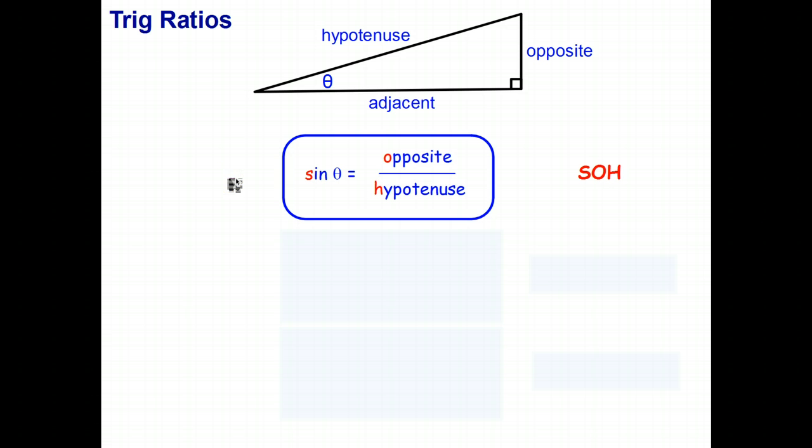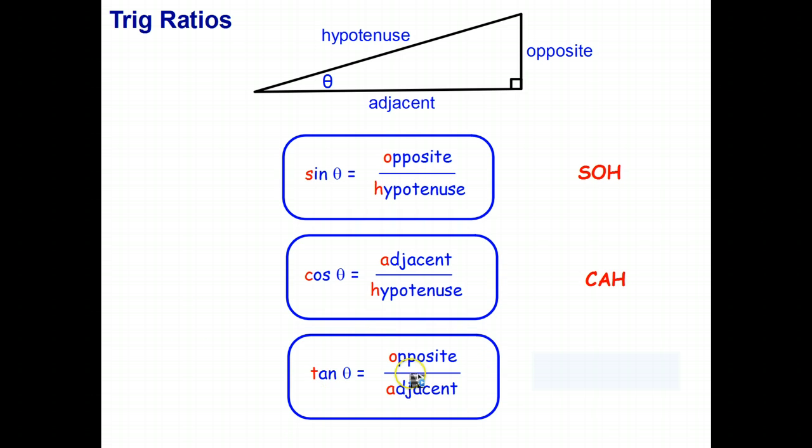The second ratio that we use in trigonometry is called the cosine ratio, spelled C-O-S-I-N-E, but we abbreviate that as just cos, C-O-S, and that's the ratio of the adjacent side to the hypotenuse. So we say cos of theta equals adjacent over hypotenuse. And we can abbreviate that as C-A-H. Cosine is adjacent over hypotenuse.